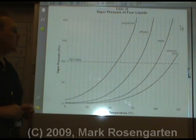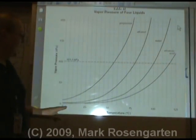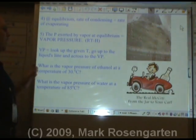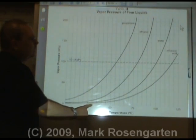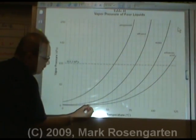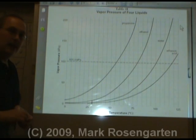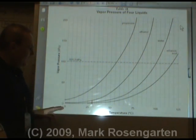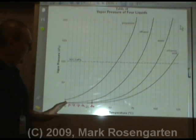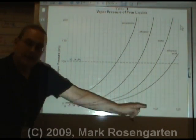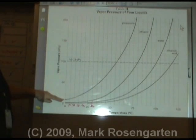This is reference table H. It gives you the vapor pressure in kilopascals of four liquids as they evaporate at different temperatures. If we want to find the vapor pressure of ethanol at 30 degrees, we start at 30 degrees on the x-axis — which goes up in intervals of 5 — go up to the ethanol line, then shoot across to the y-axis. The y-axis goes up in intervals of 10 kilopascals, so that reads about 10 kilopascals.